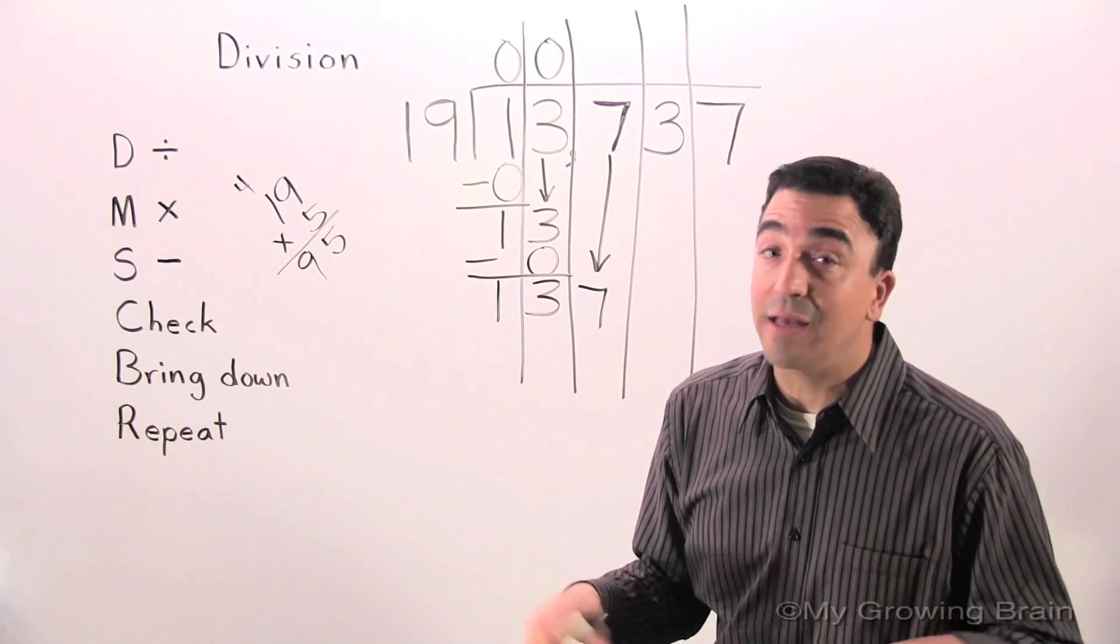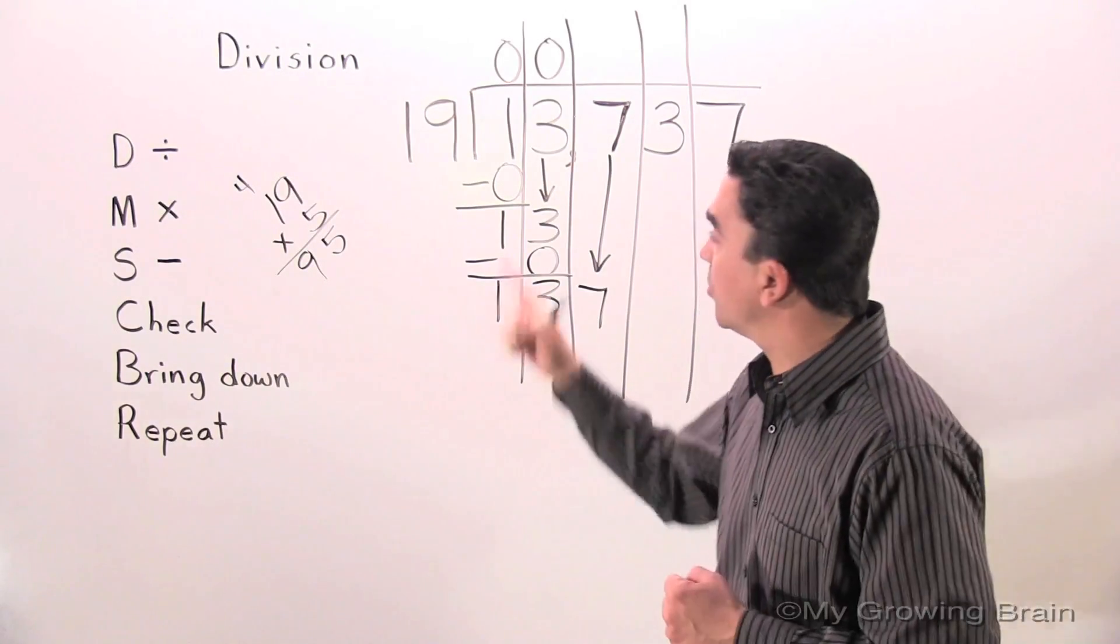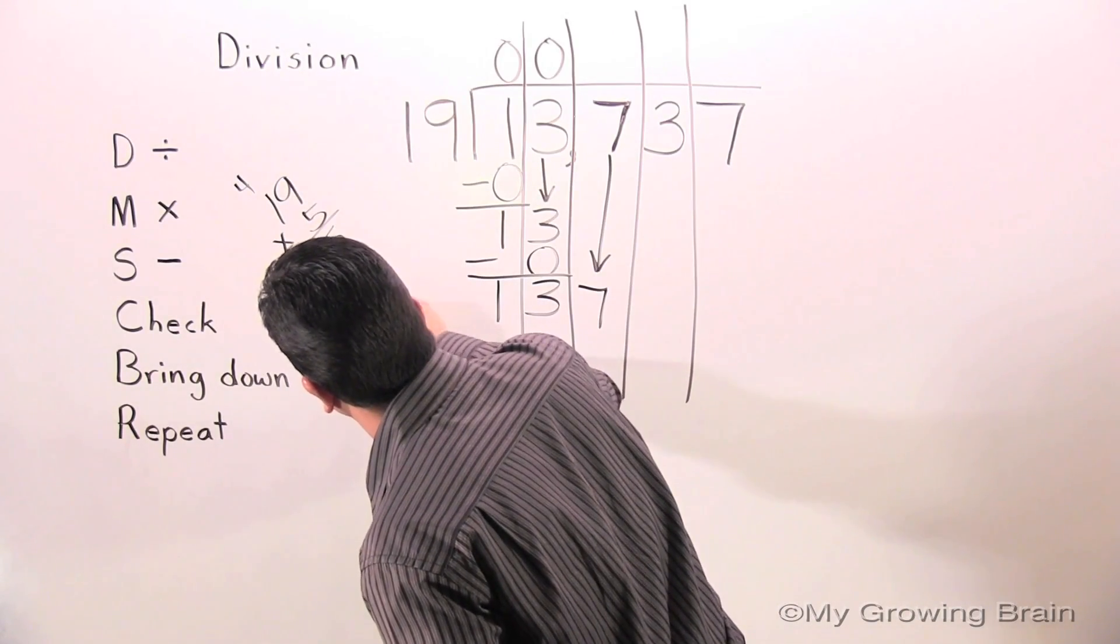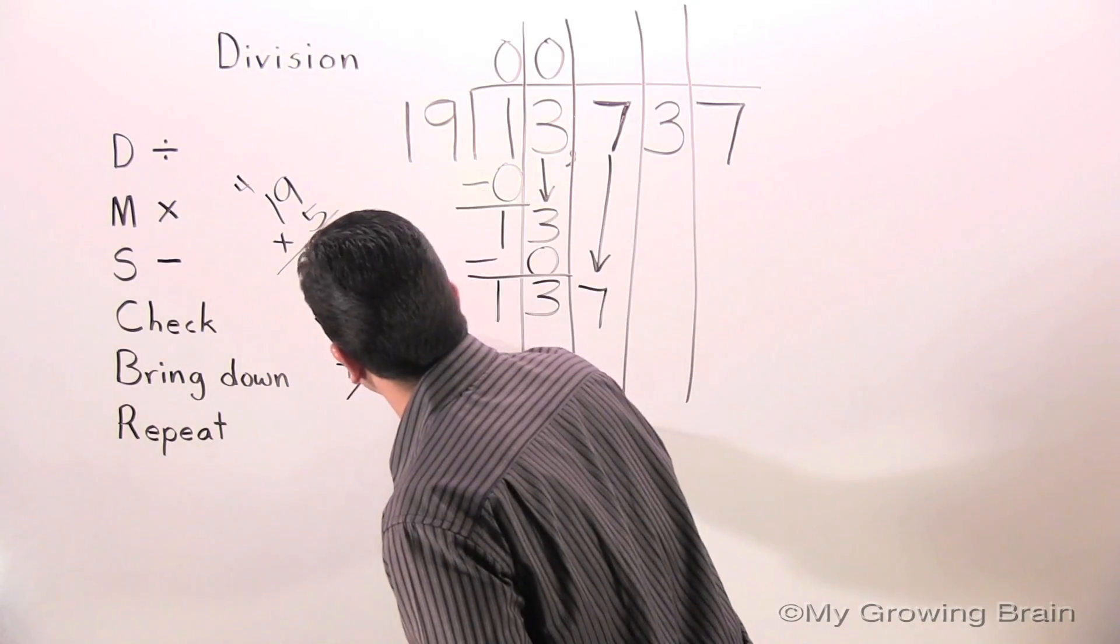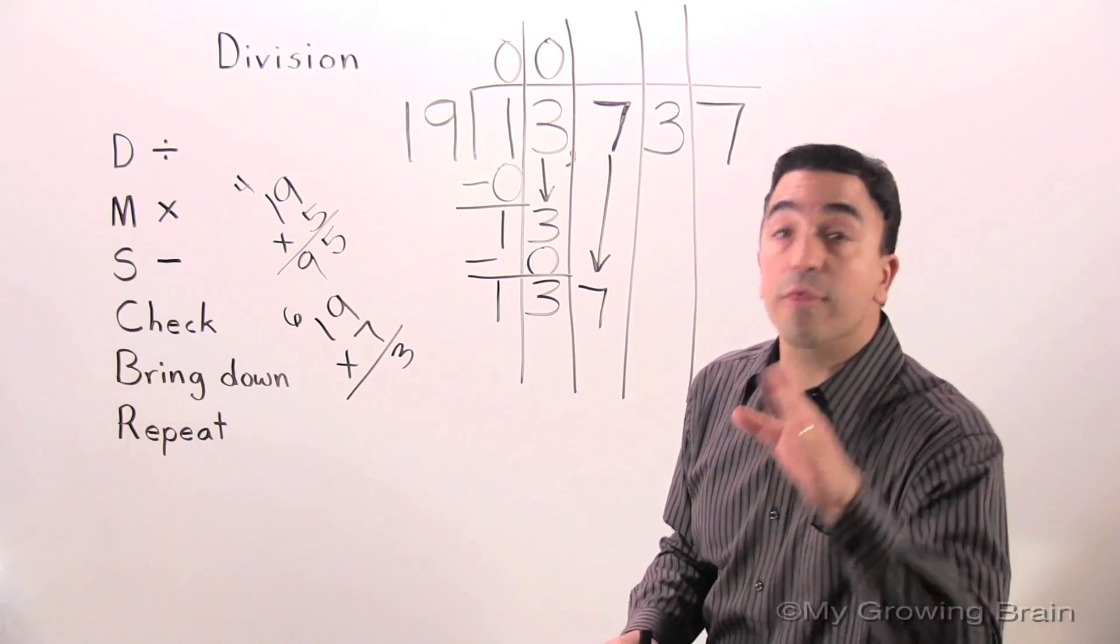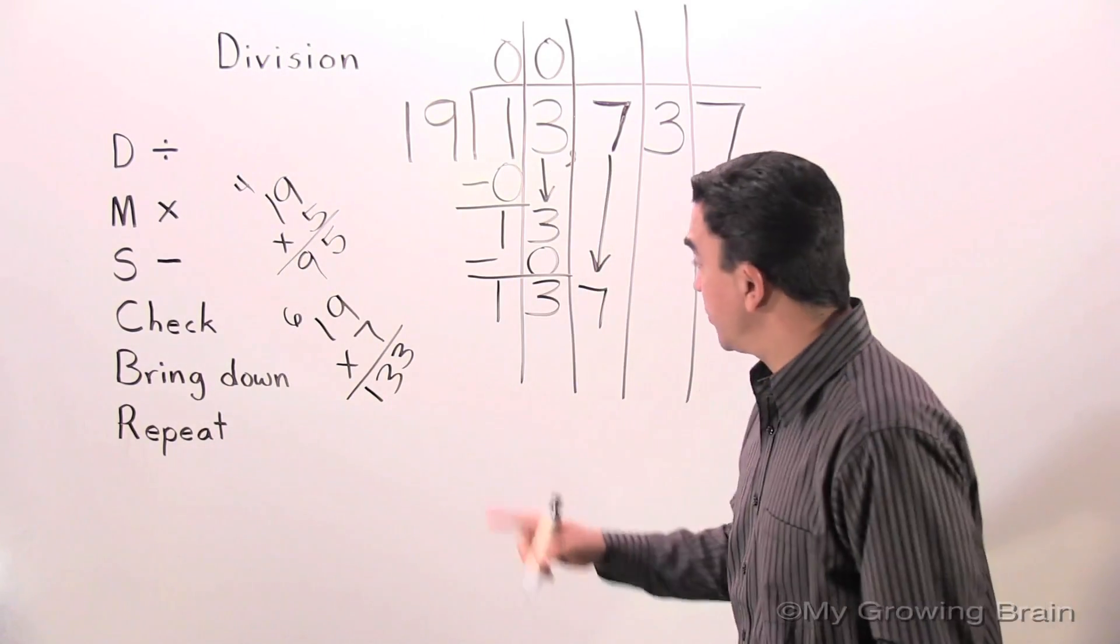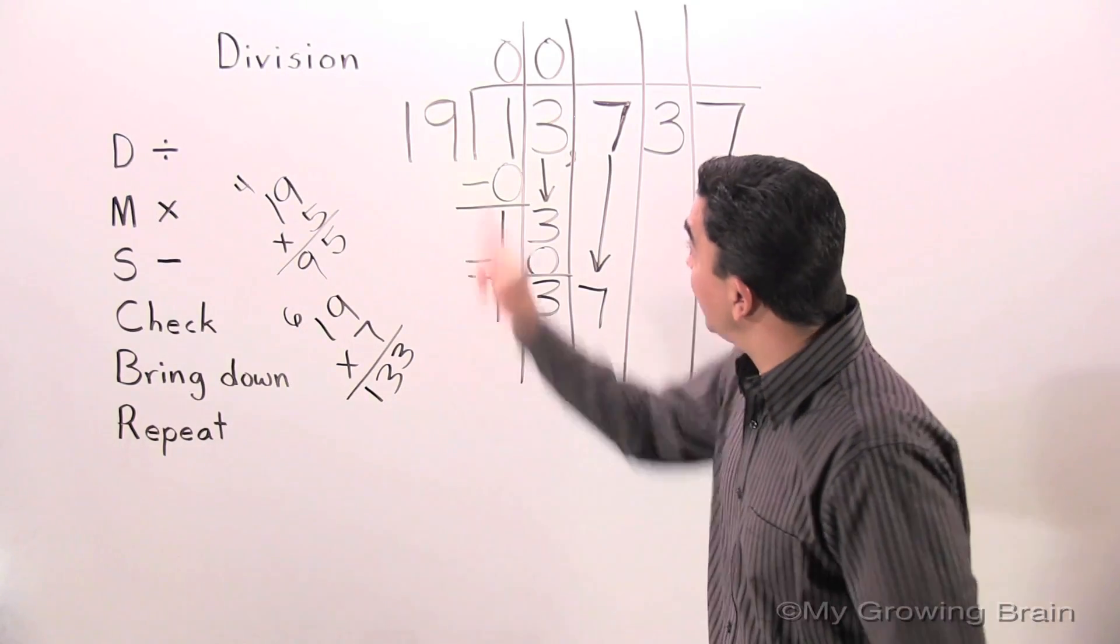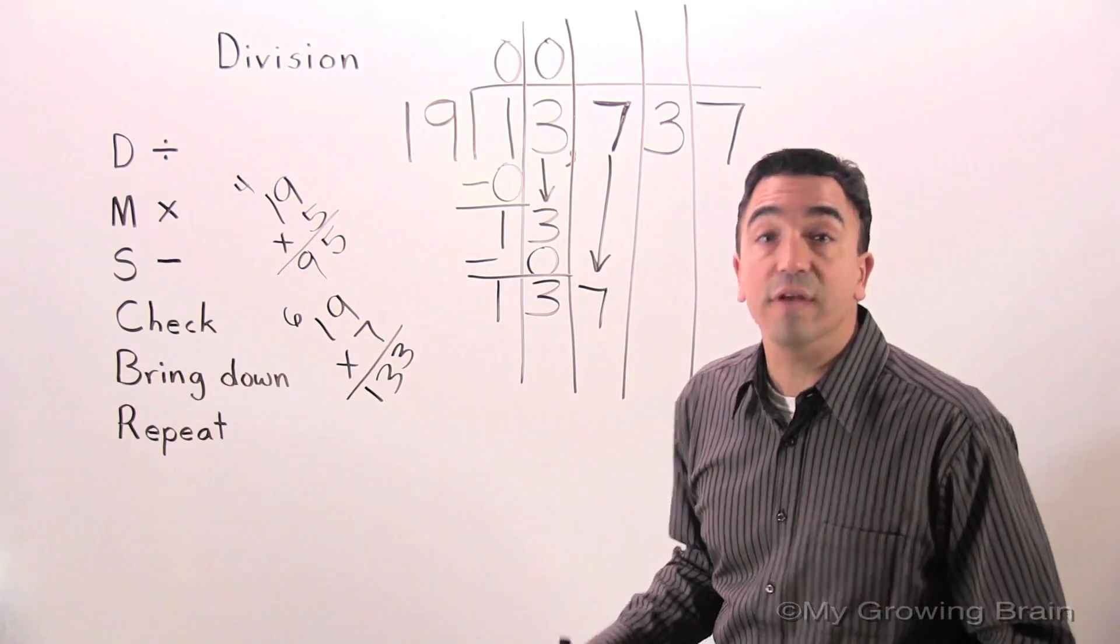95 is not going to cut it. I think we can go a little higher. Let's try to skip 6. Let's go 7. Let's go 19 times 7. 9 times 7 is 63. Regroup the 6. 7 times 1 is 7. Plus 6 is 13. 133. That's pretty close to 137. Therefore, 19 goes into 137 seven times.